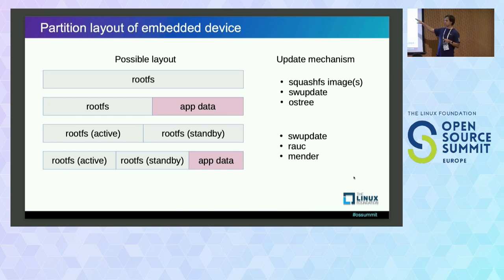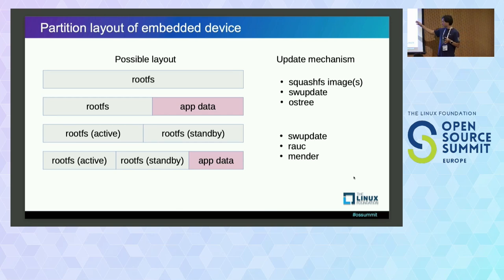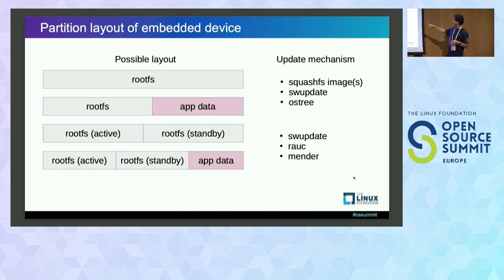Usually in those two cases you would have an update mechanism like OSTree or SWUpdate, or I also saw some devices that just use a homegrown update mechanism based on squashFS images. Or we heard a lot of talks during the week about the AB update scheme, where you have one rootFS partition currently active and the other is on standby. You could also have the same layout with some application data partition, and we heard some talks about SWUpdate and Rauc Mender which are used in that configuration.